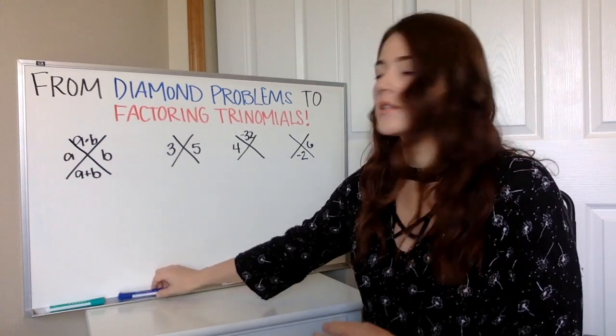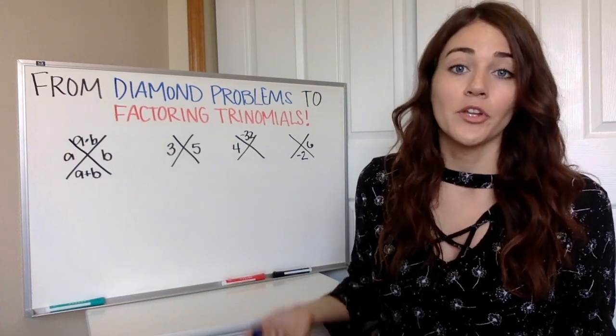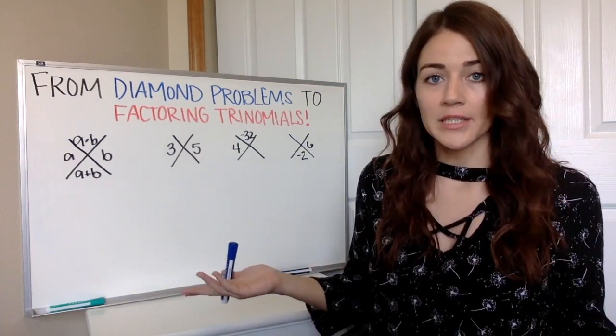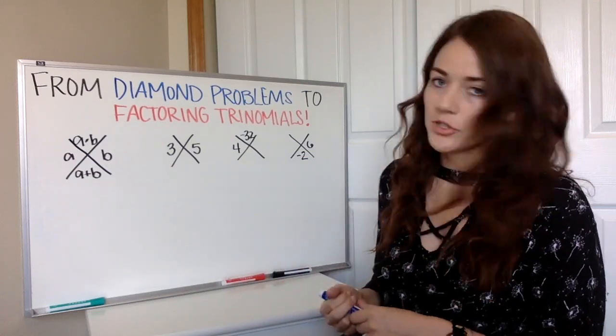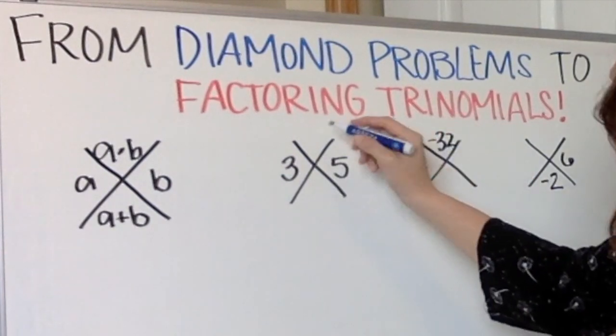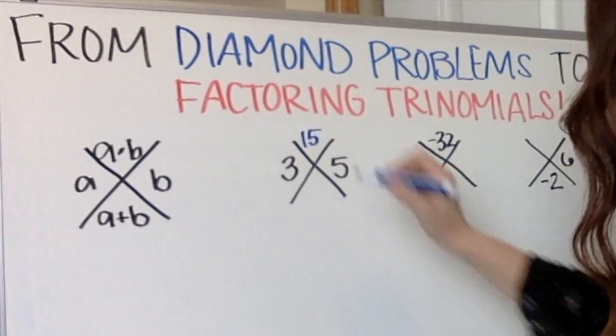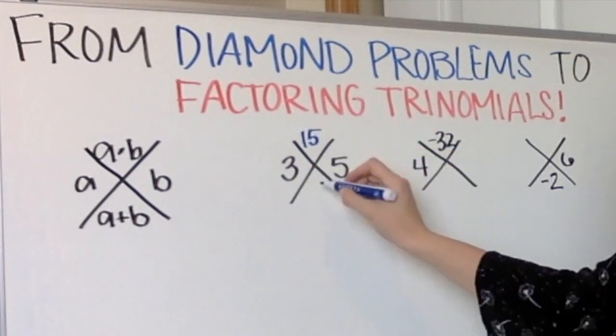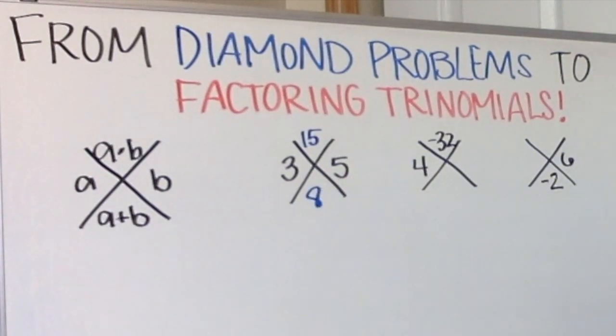Usually how these worksheets start is they'll start by giving you a and b. Pretty easy. Multiply them, add them to get our other two. They gave us a and b, three times five. What we multiply is going to go on top. Three plus five. What we add, their sum, is going to go on bottom.